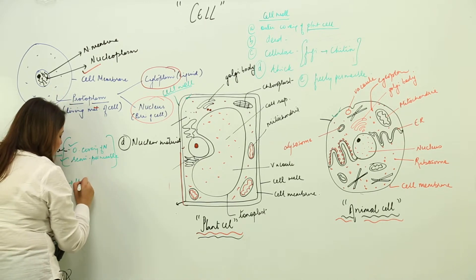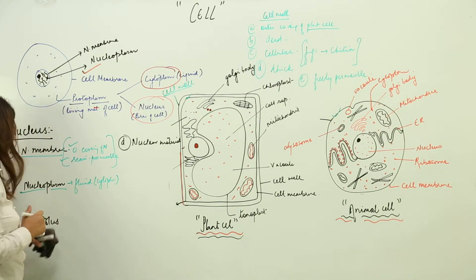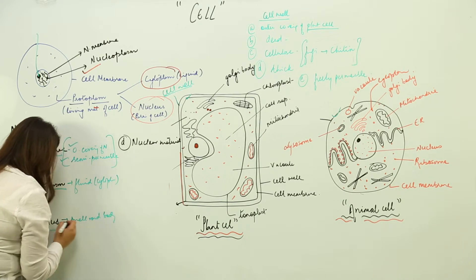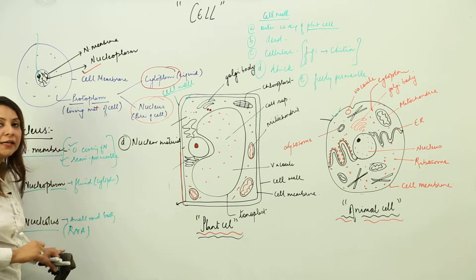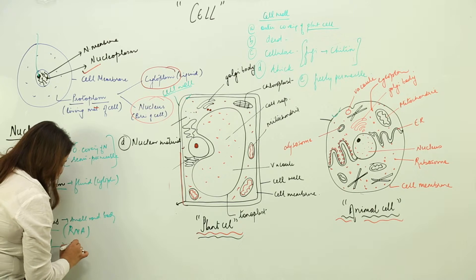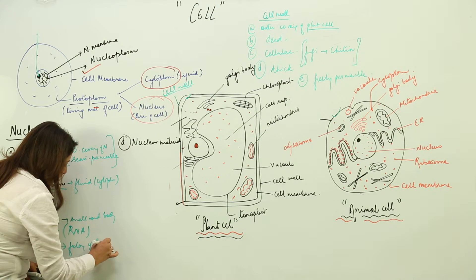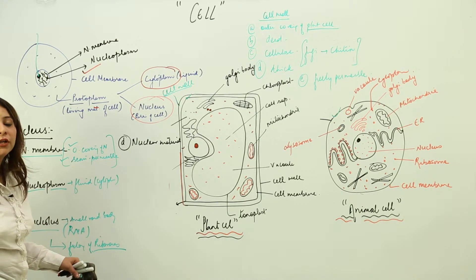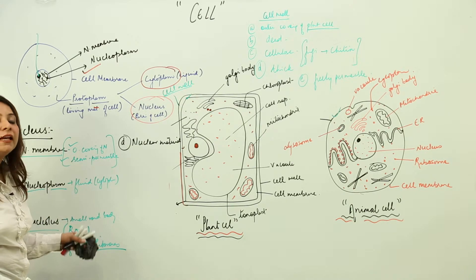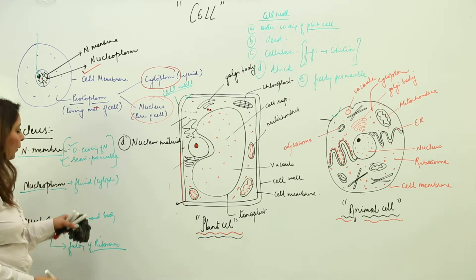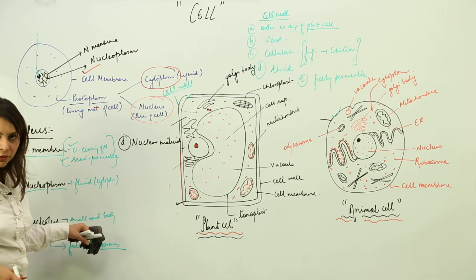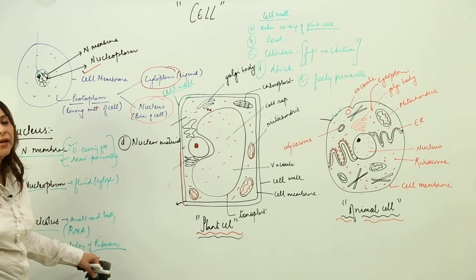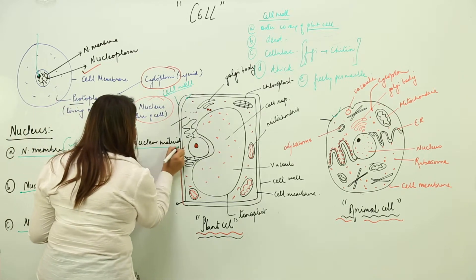Nucleoplasm is the fluid — the cytoplasm present inside the nucleus. The nucleolus is a small round body present in the nucleus, mainly made up of genetic material RNA. It is a factory of ribosomes — it helps in the synthesis of ribosomes for the cell. Ribosomes in turn are a factory of proteins.